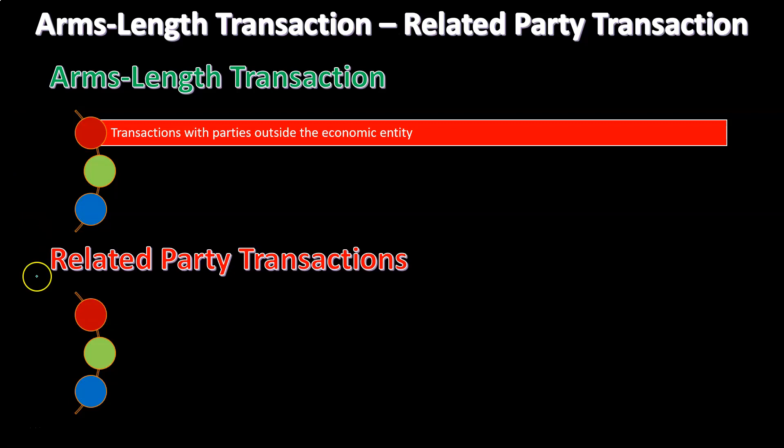If it's a related party transaction, then all that kind of goes out the window — we have a problem from an accounting standpoint, because now we have a related party transaction. We can't depend on the transaction itself; we can't depend on two independent people being self-interested, resulting in a transaction that would be at market or fair value. Obviously, that's going to be one of the issues involved if you're talking about parent-subsidiary relationships and transactions between parents and subsidiaries — it's just the same thing.